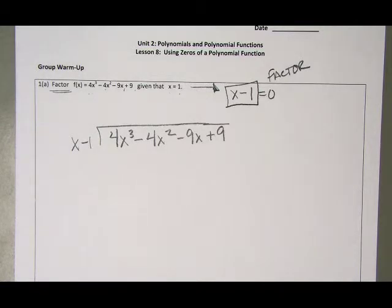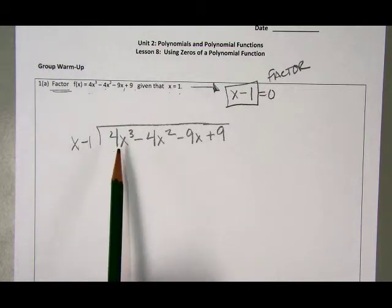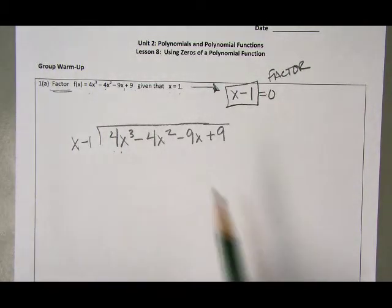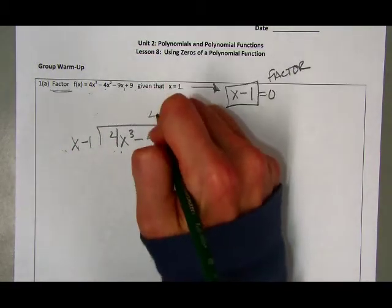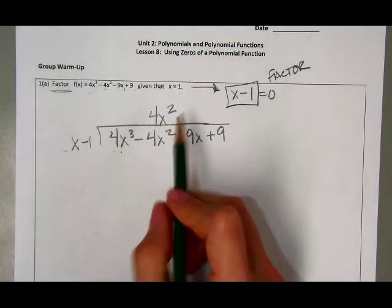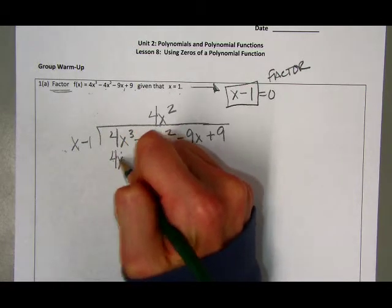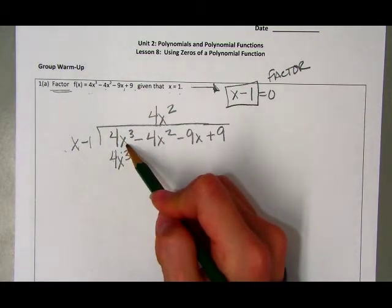Now I can go through and long divide to get my other factors. 4x cubed is my inside leading term and x is the outside leading term. I'm missing a 4 and an x squared. So my first term up top is 4x squared, since 4x squared times x gives you the same thing as the inside leading term.